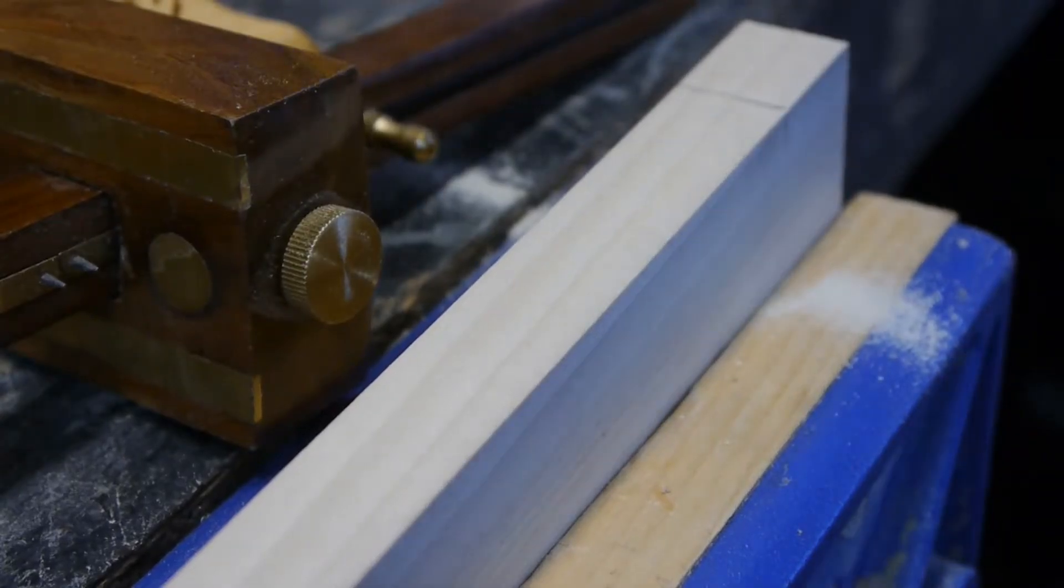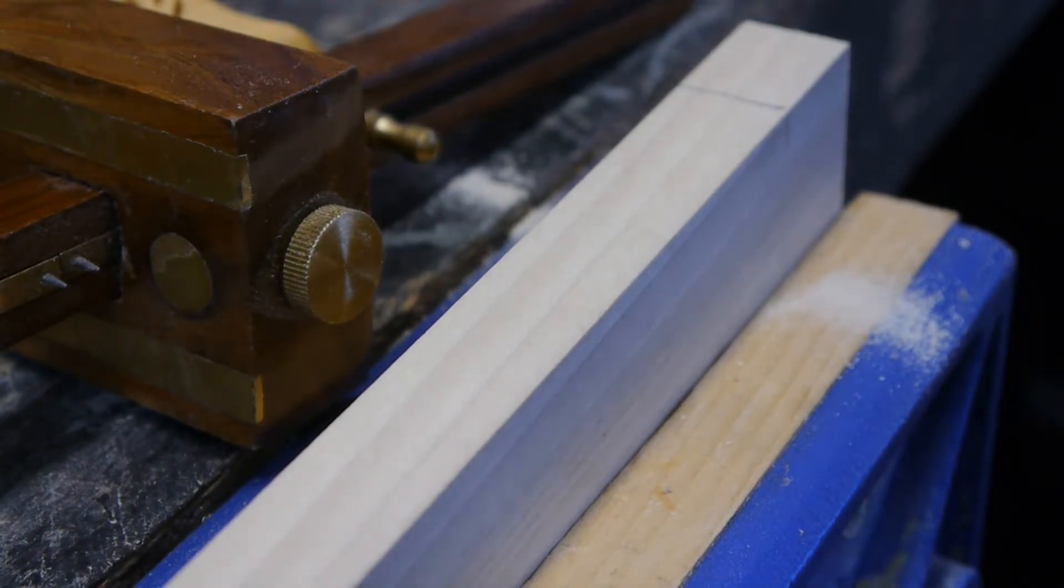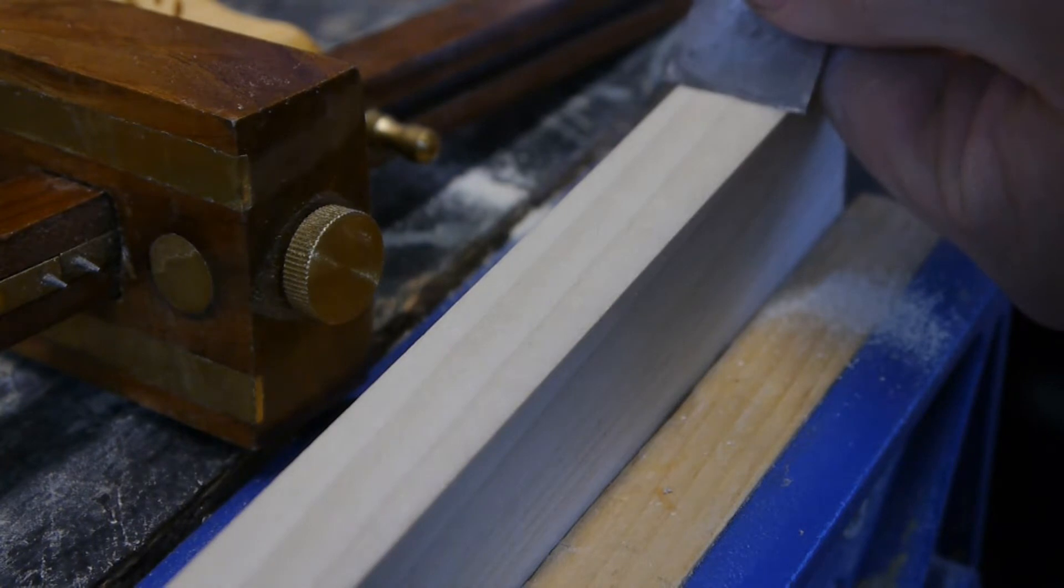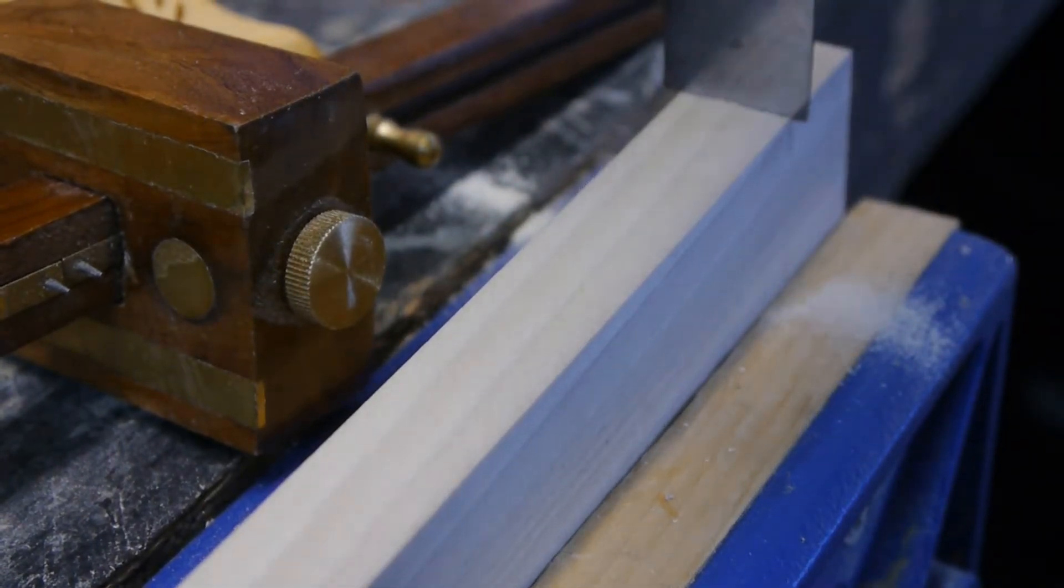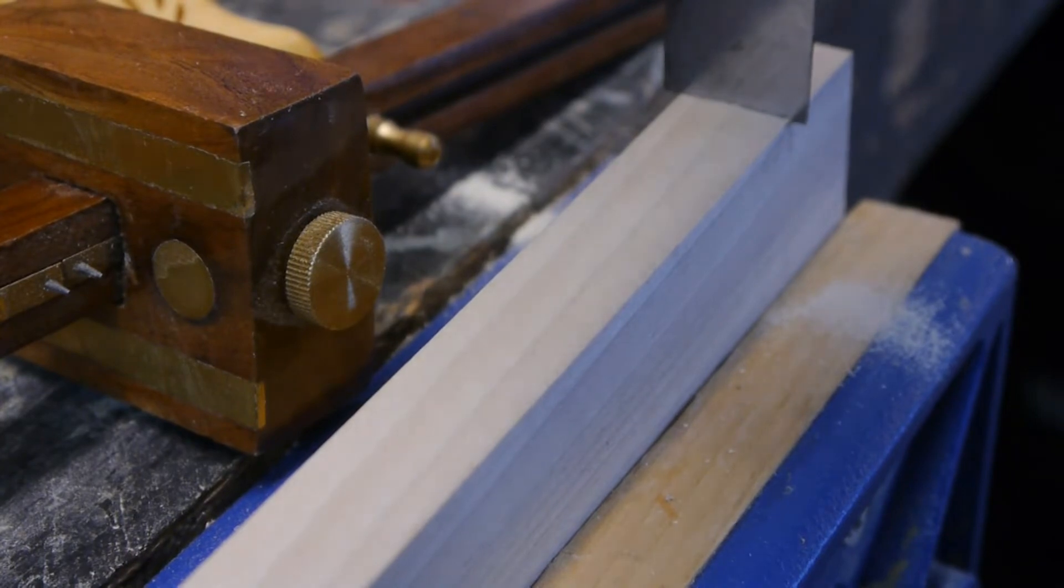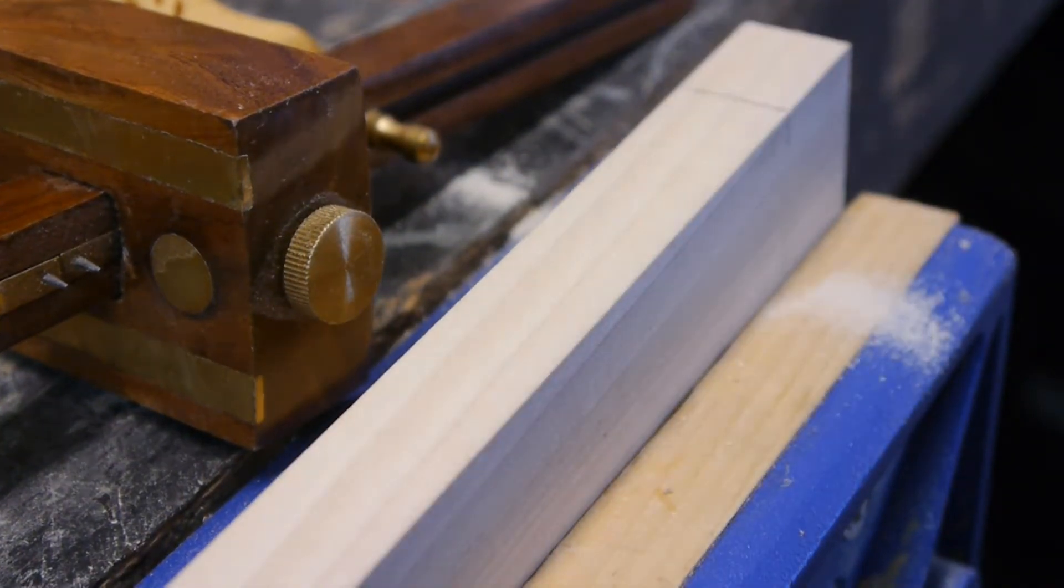To get a nice shoulder for my saw to start in, I'm going to take a chisel and put it right in that knife line, hold my chisel up straight, and push down. Not too hard, not too deep.